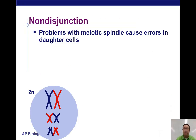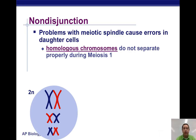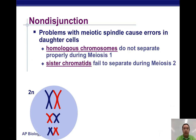We're going to start with non-disjunction. These errors are caused by problems with the mitotic spindle that cause errors in the daughter cells. Homologous chromosomes don't separate properly during meiosis I, or the sister chromatids fail to separate during meiosis II. If it happens in meiosis I, you have extra copies or missing copies of all the chromosomes. If it happens in meiosis II, it's usually a single chromosome that has extra copies or a missing copy.